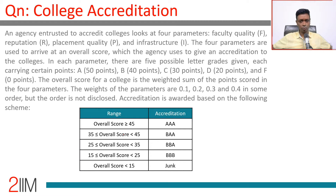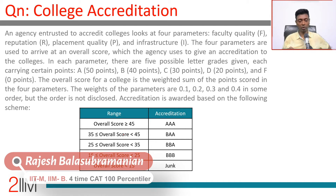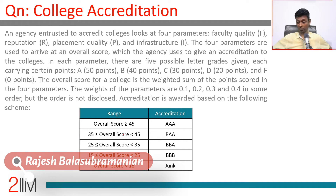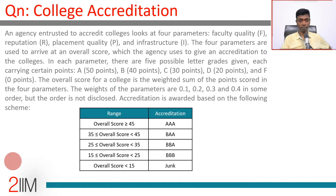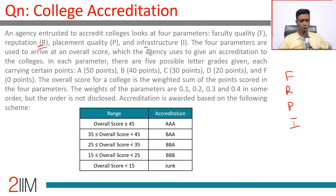College accreditation — a very doable question. An agency interested in accrediting colleges looks at four parameters: faculty quality, reputation, placement quality, and infrastructure — F, R, P, and I. These four parameters are used to arrive at an overall score, which the agency uses to give an accreditation to the colleges.